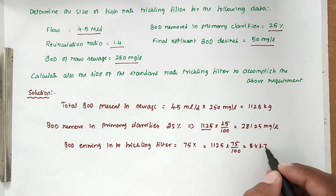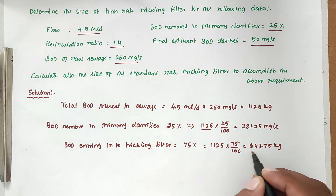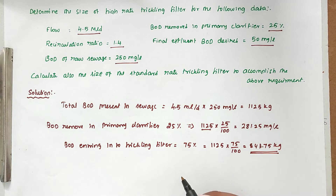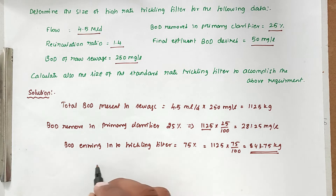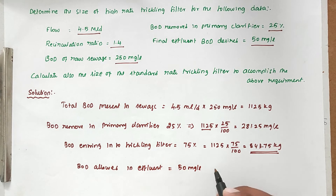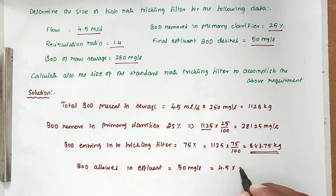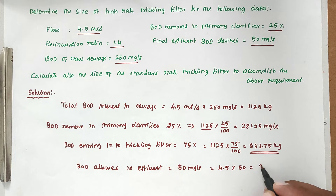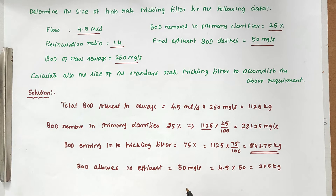This 843.75 kg is the BOD entering into the secondary clarifier. The BOD allowed in the effluent is 50 mg/L, so: 4.5 million liters into 50 mg/L gives 225 kg allowed in the effluent.